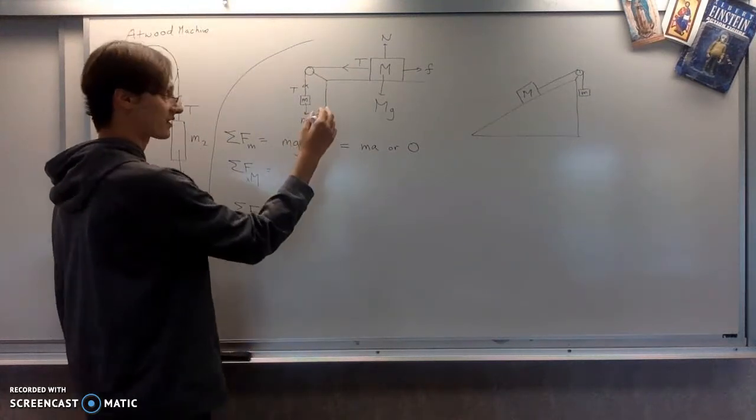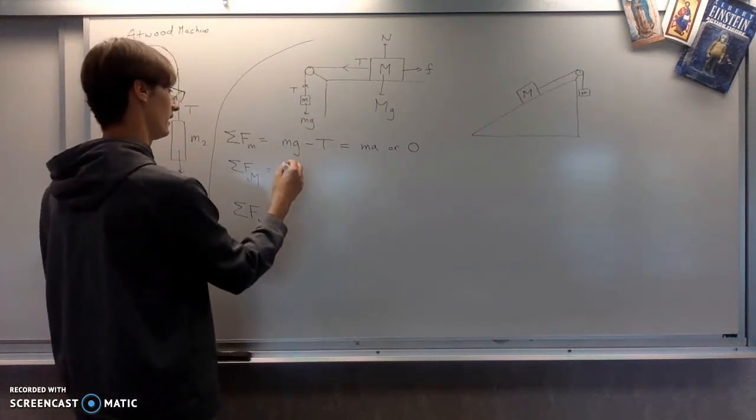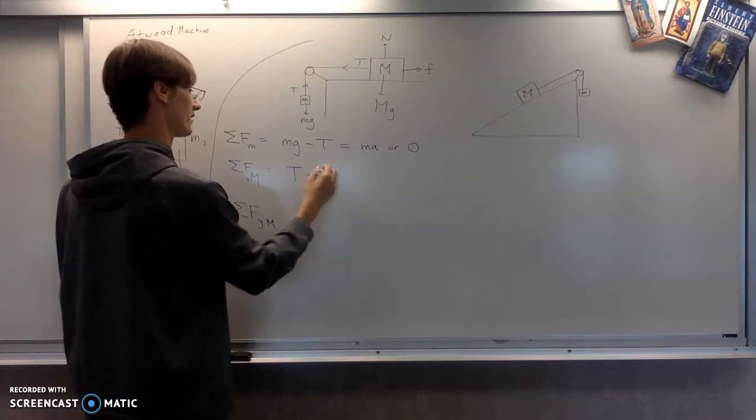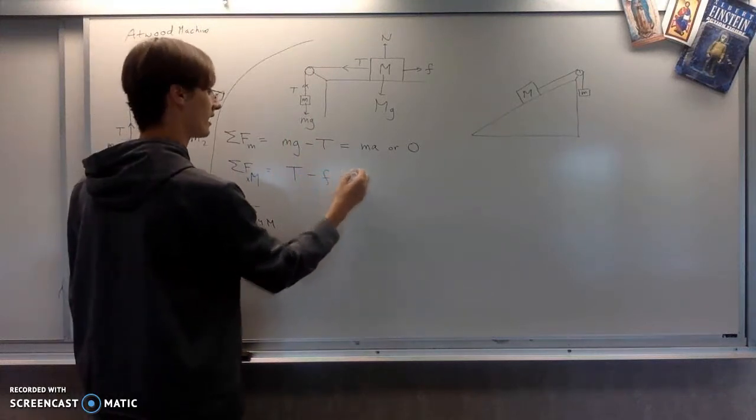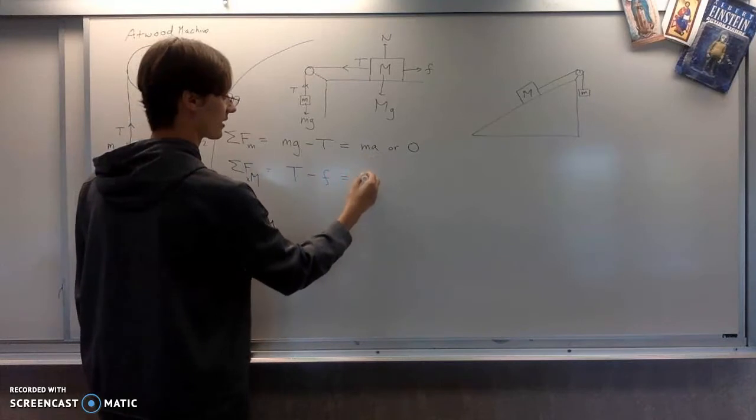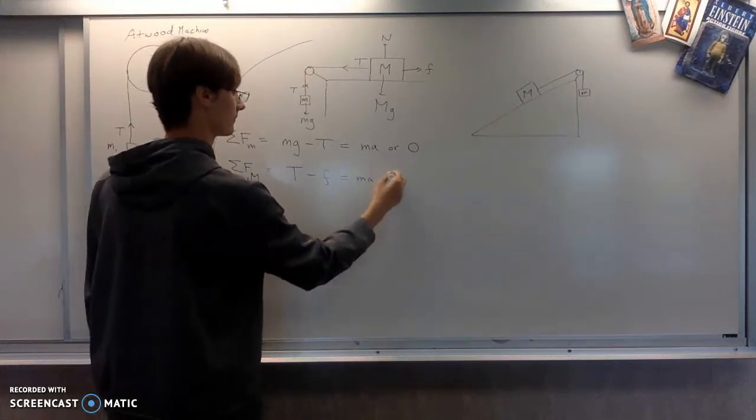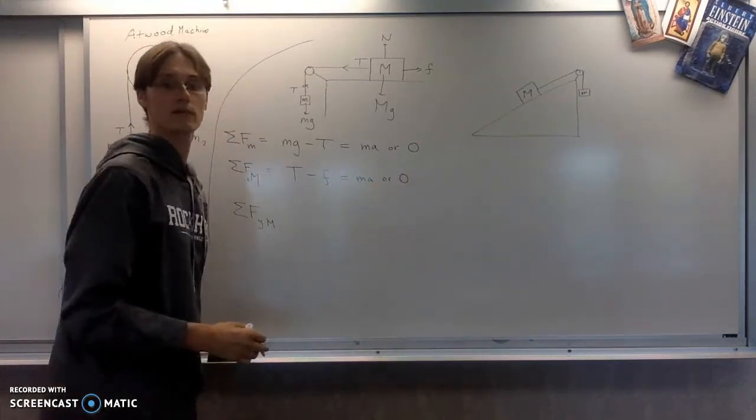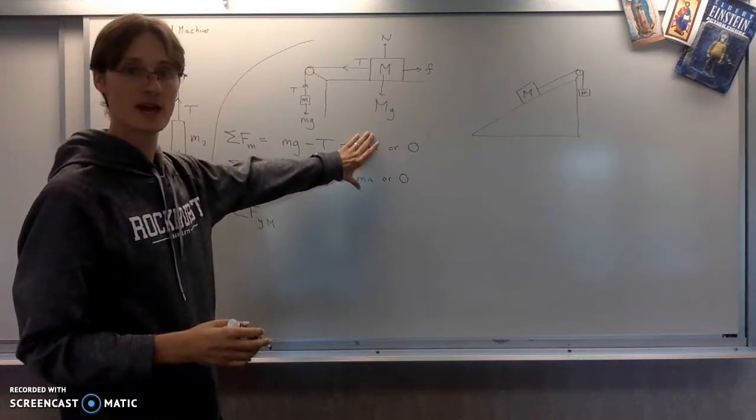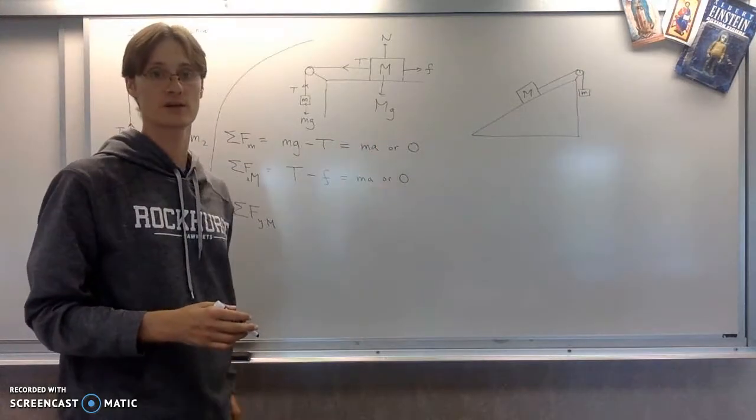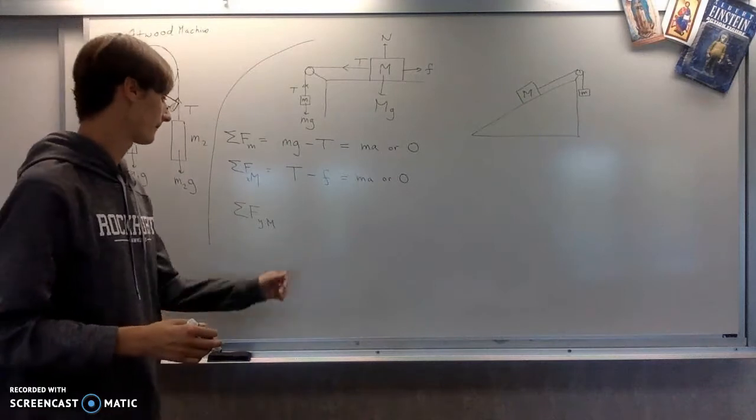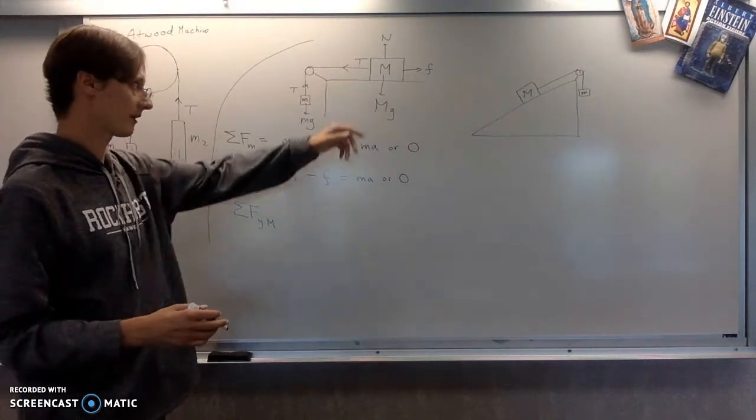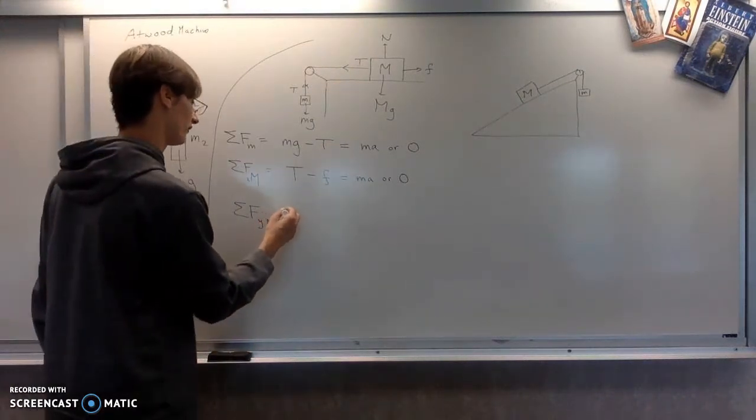So if that's what it looks like, then we would have T minus friction equals, again, either Ma or zero. These are both going to be Ma or they're both going to be zero.